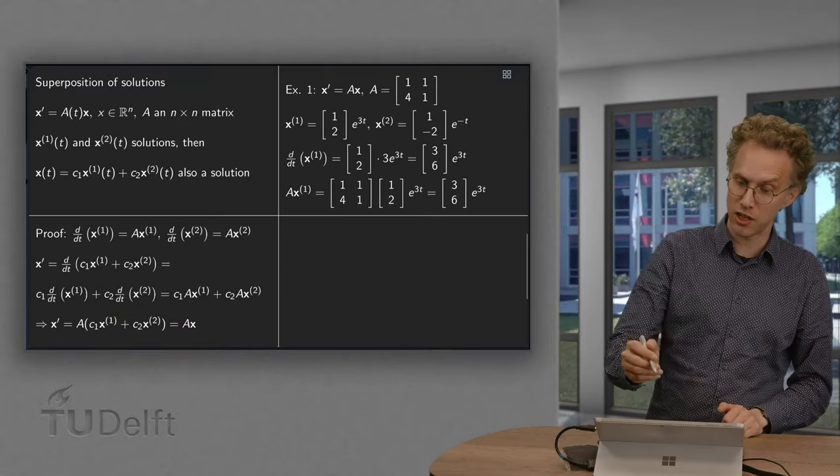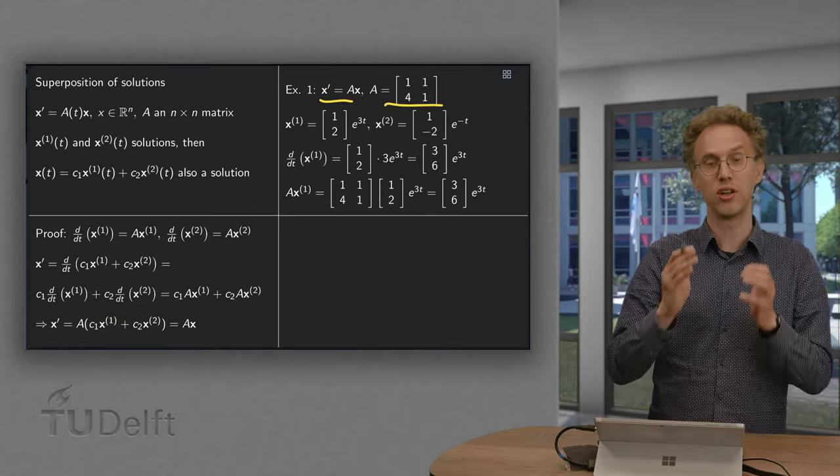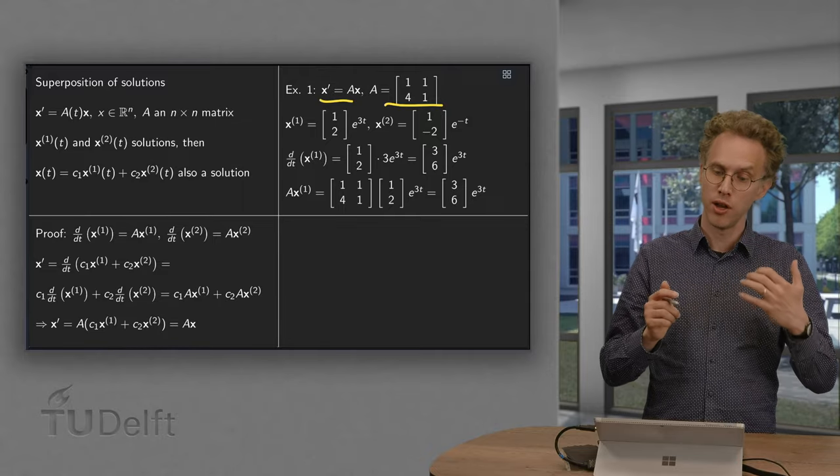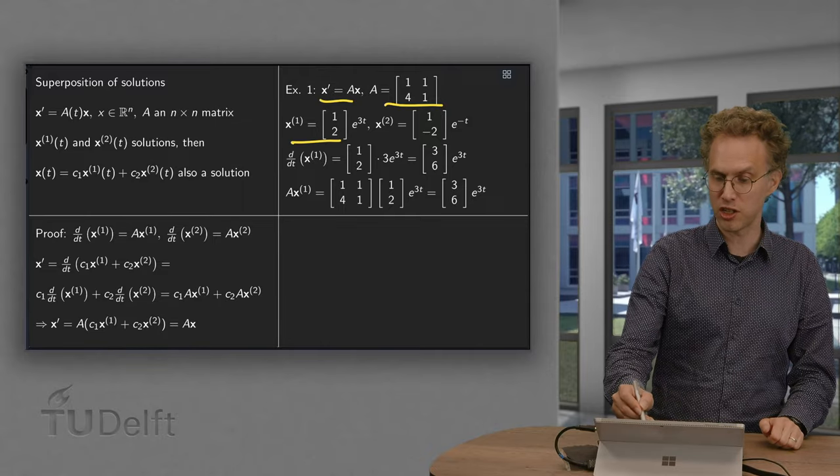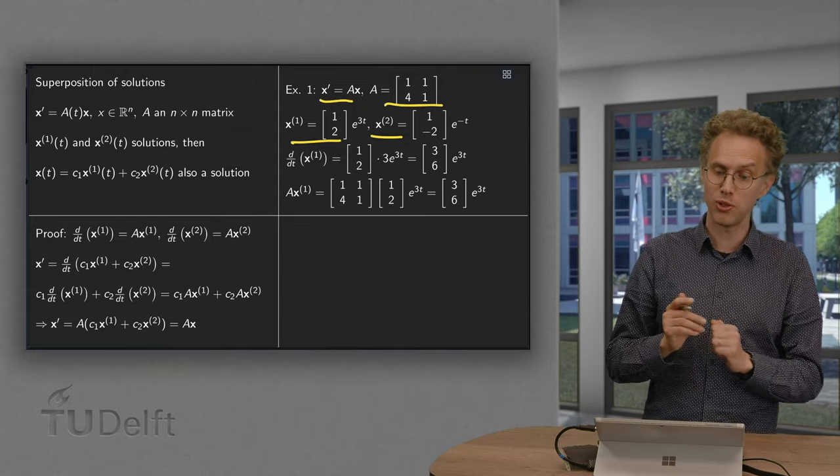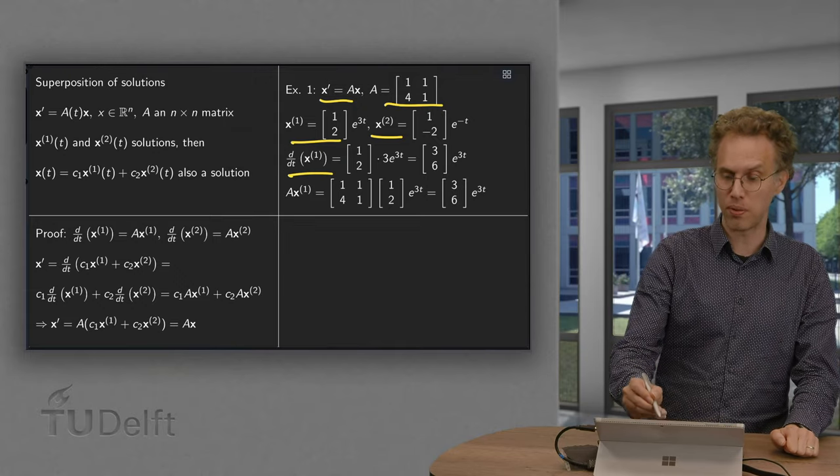Like in this example where we have x prime equals A times x where A is just a constant matrix. We have two solutions x1 and x2. Let's check that x1 is indeed a solution by computing x1 prime.